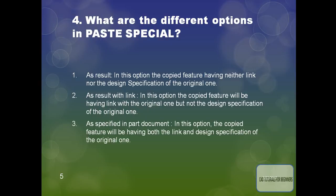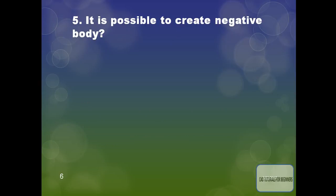The next paste special option is 'As Specified in Part Document'. In this option, the copied feature will have both the link and design specification of the original one. It does not create a dead body — it has all the features available in the copied body.